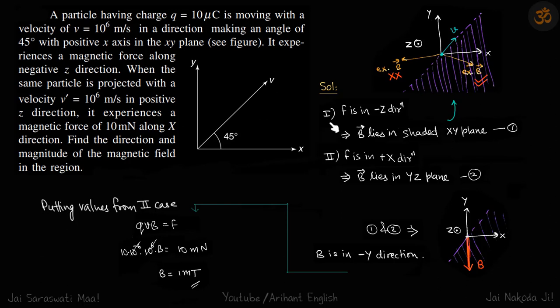Let's consider the first case where the force is in negative z direction, which means the field has to be in the xy plane—that is perpendicular to minus z direction. And because it is minus z, that means the field has to be in this half of the plane. So if we take the B field in this shaded part, let's say here.